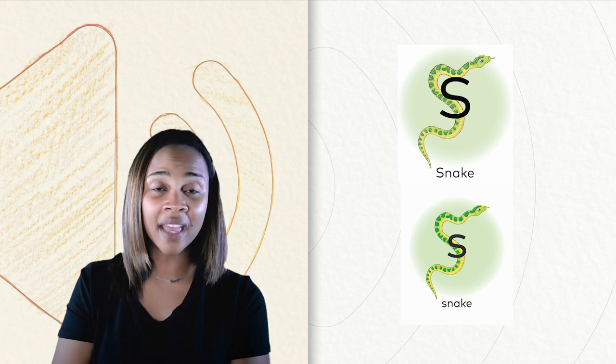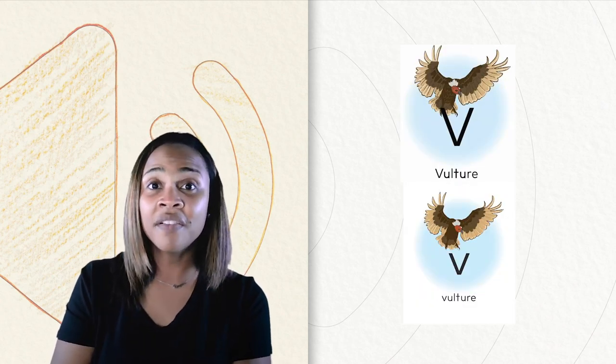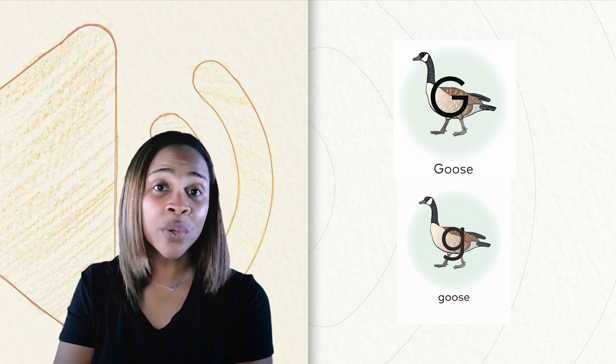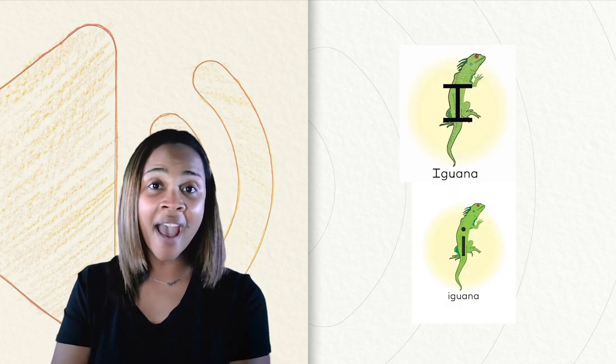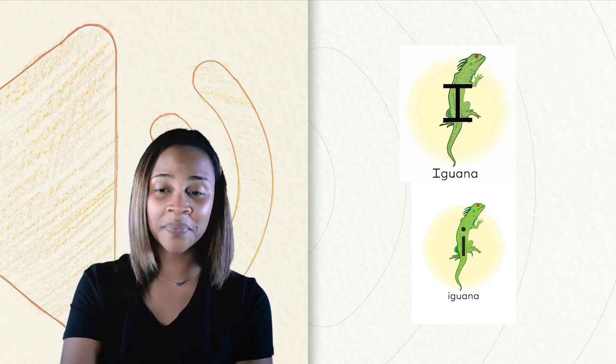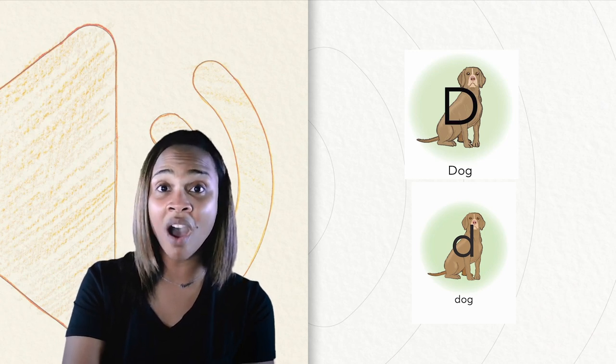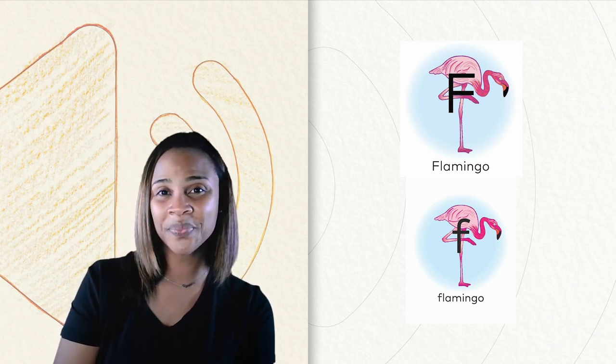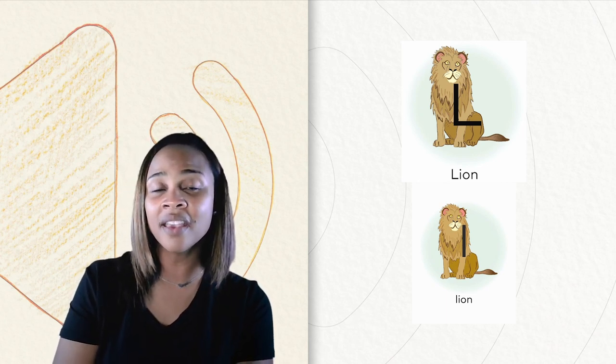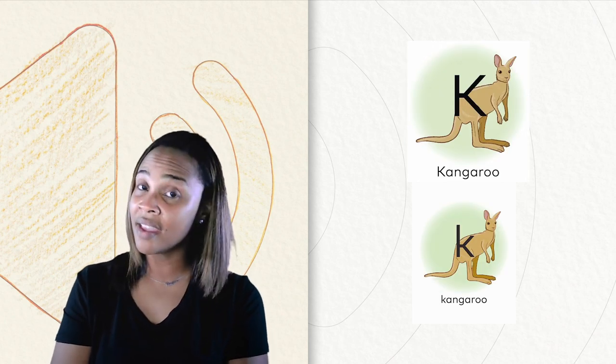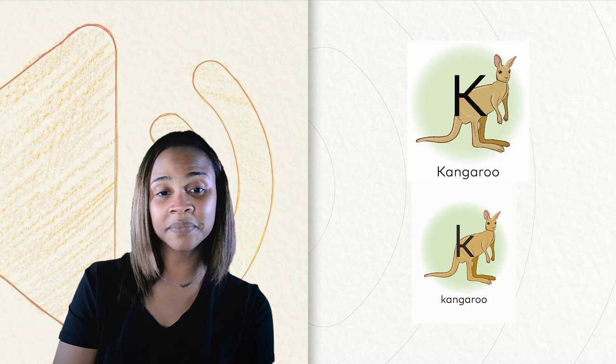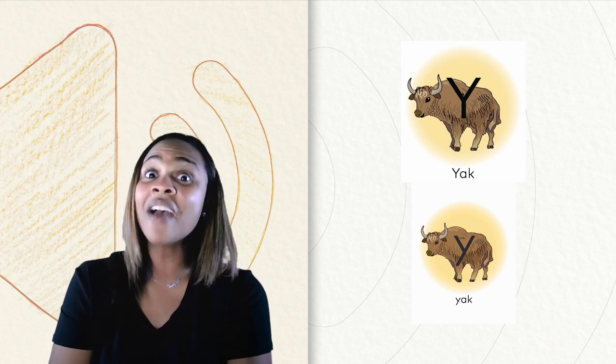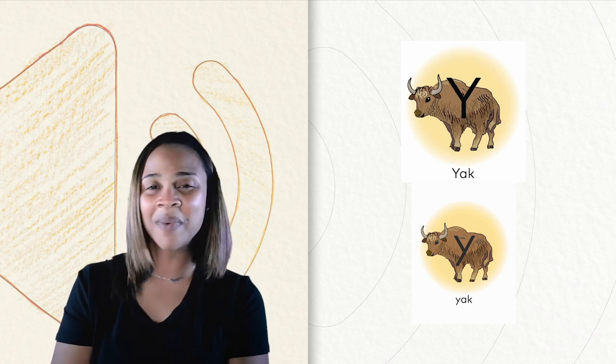S, snake. V, V, vulture. G, G, goose. I, I, iguana. D, D, dog. F, F, flamingo. L, L, lion. K, K, kangaroo. Y, Y, yak. Great job. We have learned so many letters. Awesome job with your letter sound chant.